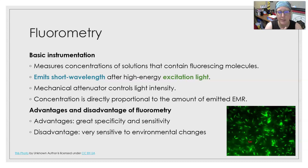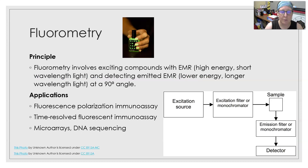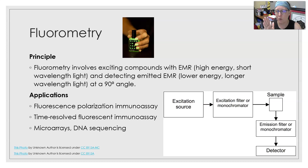The advantages and disadvantages of fluorometry: the advantage is it has great specificity and sensitivity — increased sensitivity and specificity for immunoassays and nucleic acid probes. The disadvantage is it is very sensitive to environmental changes. The fluorometry principle involves exciting compounds with high energy, short wavelength light EMR, and then detecting the emitted light, which is at a lower energy, longer wavelength. It is always detected at a 90 degree angle, unlike spectrophotometry where detection was linear in a straight line.